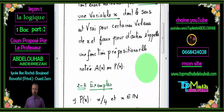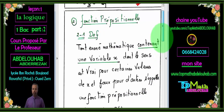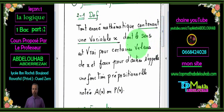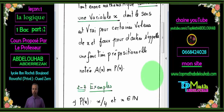Contrairement à une proposition — une proposition c'est un énoncé mathématique qui ne contient aucune variable — on détermine directement si son sens est vrai ou faux. Par contre, pour une fonction prépositionnelle, elle contient une variable ou plusieurs variables, et on ne connaît le sens de cet énoncé mathématique que lorsqu'on remplace la variable ou les variables par des valeurs bien déterminées.